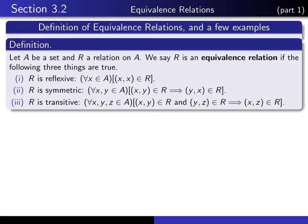We say that R is reflexive if for every element X of A, the pair (X, X) is in the relation. In other words, X is R-related to itself. R is symmetric means for every pair of elements in A, if X is R-related to Y, then Y is R-related to X.